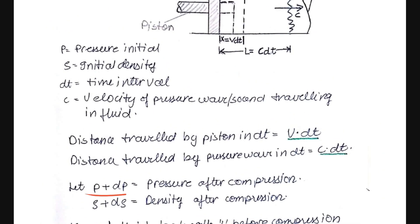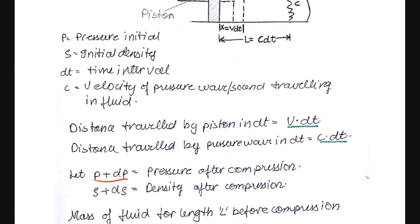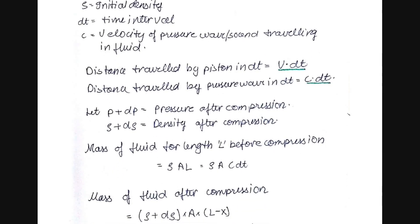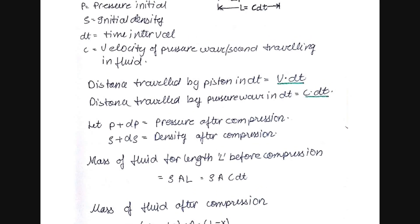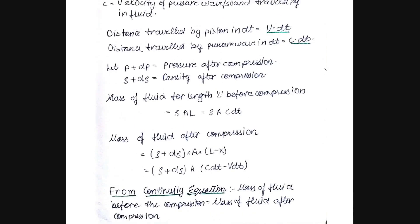Let p + dp be the pressure after compression. Initially the pressure was p, and after compression it becomes p + dp. Similarly, the density after compression becomes rho + d·rho. Since mass flow rate remains constant and is not affected by pressure, we first find the mass of fluid for length l before compression: mass = rho · A · l. We then replace l with c · dt.